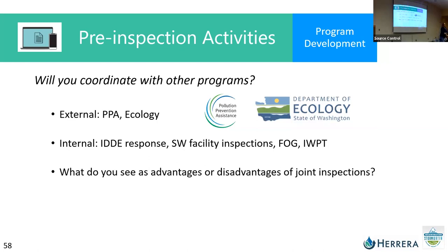When you're thinking about your inspections, consider whether you're going to coordinate with other programs. There's the Ecology Pollution Prevention Assistance Program, which started out as local soil control in 2008. So if those inspectors have been out there, you want to know where they've been, who they've talked to, what kind of work they've done, and what approach they took.